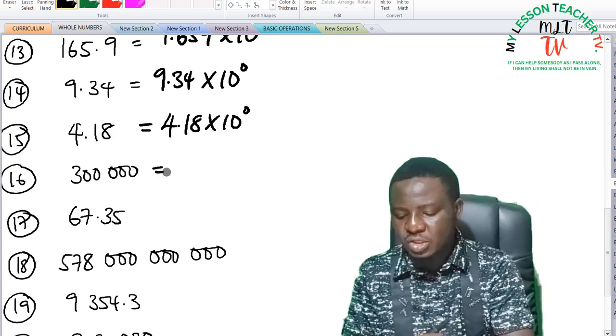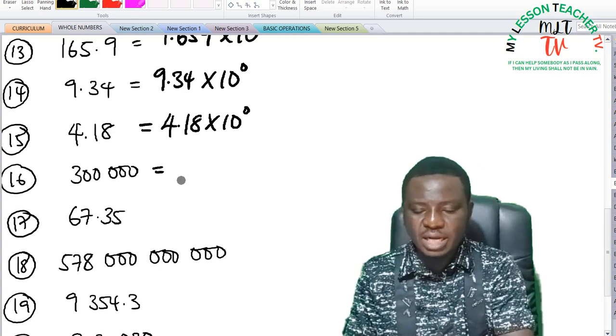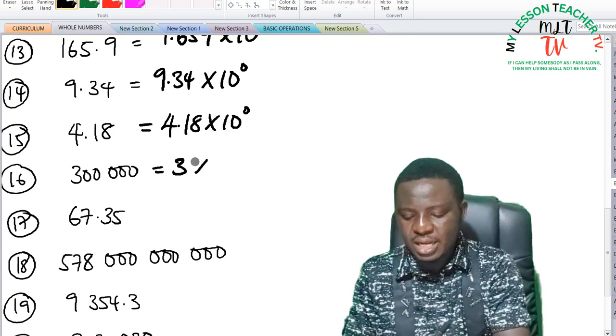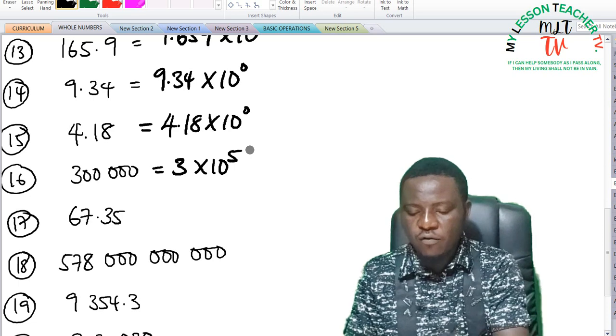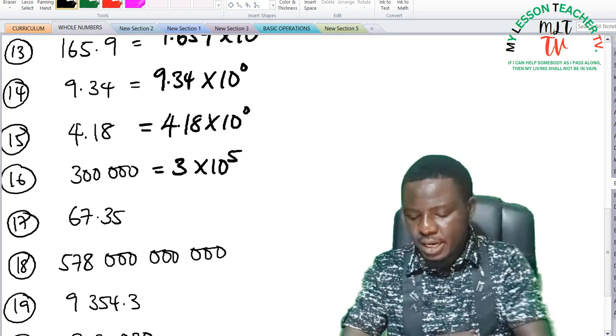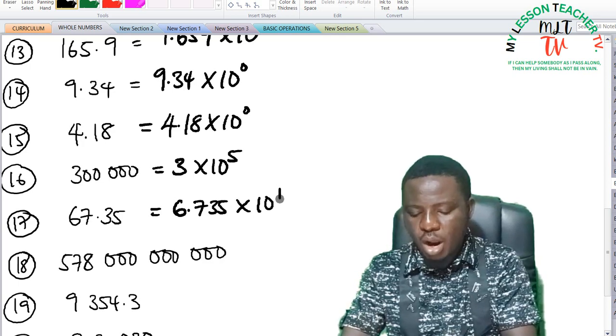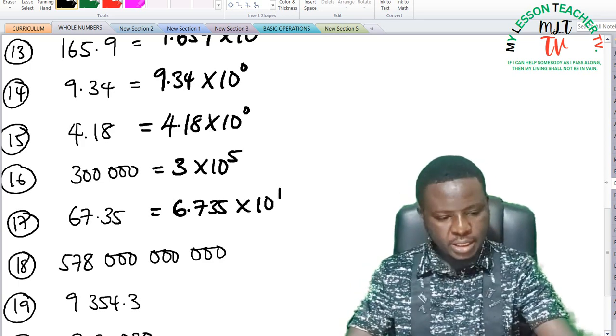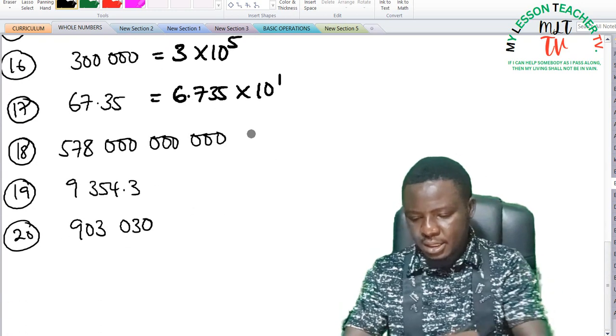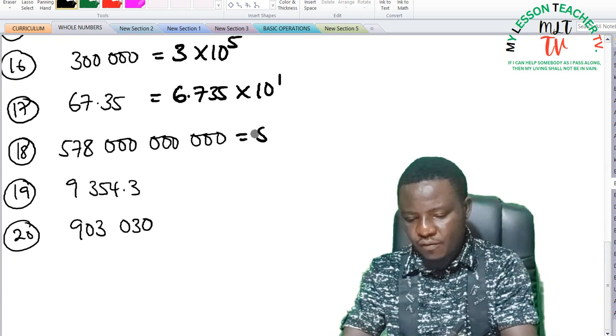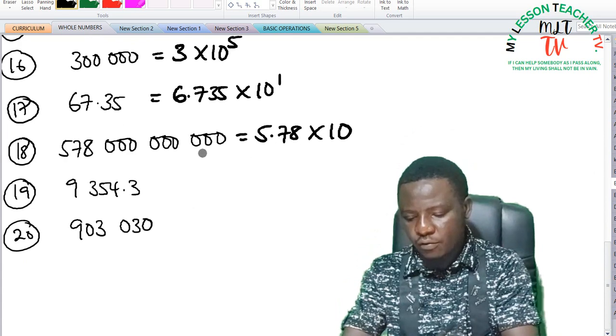Number 16, this is 300,000. 300,000 can be expressed as 3 times 10 raised to the power of 5. Number 17 can be expressed as 6.735 times 10 raised to the power of 1. In number 18, this can be said to be 5.78 times 10 raised to the power of 3.